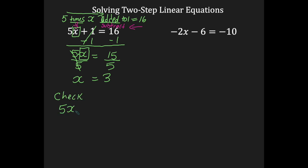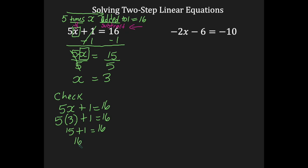Now we can check our answer. The equation was 5x plus 1 equals 16. Solving for x, we found x was 3, so wherever I see x I replace it by its numerical value: 5 times 3 plus 1 equals 16. This looks like plug and chug — I multiply first. 5 times 3 is 15, plus 1 equals 16. 16 on the left gives me 16 on the right, so my answer is correct.